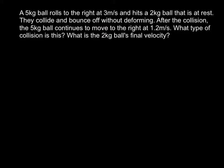We're going to look at two examples today. The first example states that a 5kg ball rolls to the right at 3 meters per second and hits a 2kg ball that is at rest. They collide and bounce off without deforming — deforming means to change shape. After the collision, the 5kg ball continues to move to the right at 1.2 meters per second. What type of collision is this, and what is the 2kg ball's final velocity?